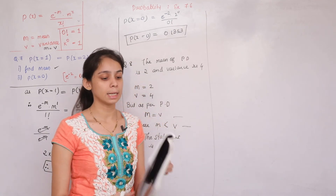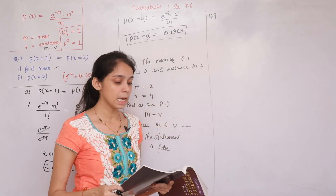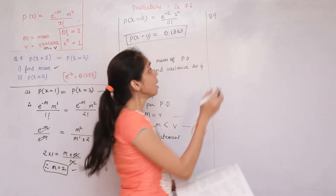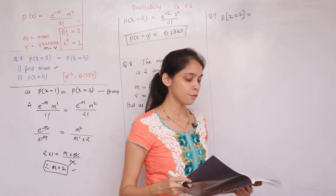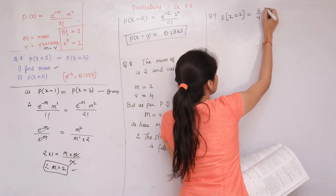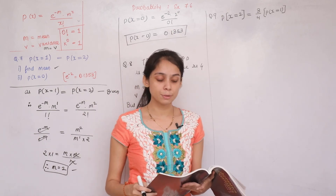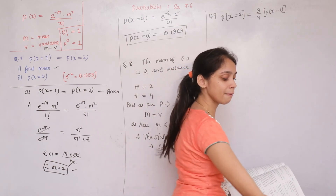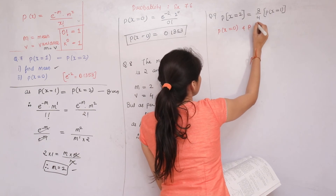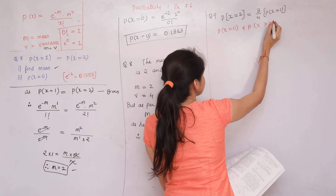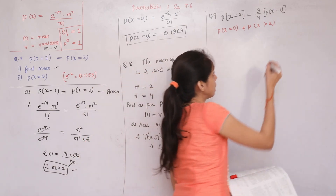Question number 9 is similar to question 7. It states: random variable X follows Poisson distribution such that P(X=2) = (3/4) × P(X=1). We must find P(X=0) and P(X>2). Given: e^(-1.5) = 0.2235. First, find m from the given condition.